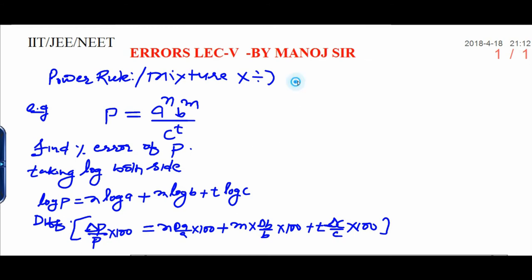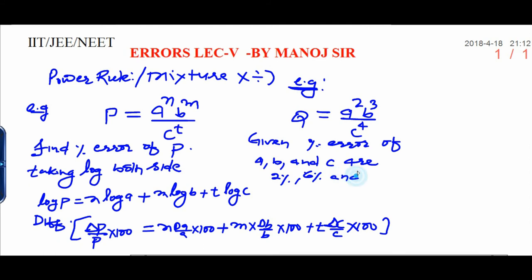This I can illustrate with example. Let's see the example. Here, I am taking a quantity Q and a raised to power 2 into b raised to power 3 divided by c raised to power 4. So, given in the question, percentage error of a, b and c are 2%, 6% and 4% respectively.